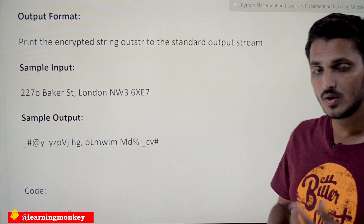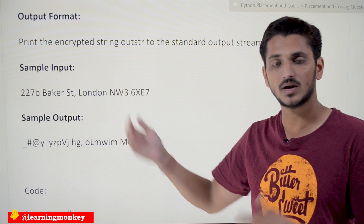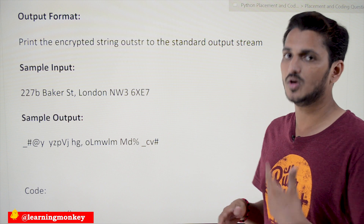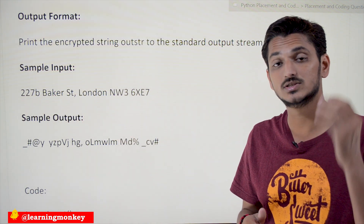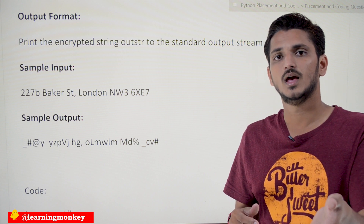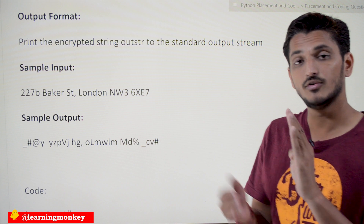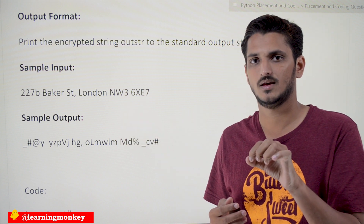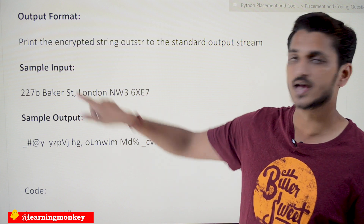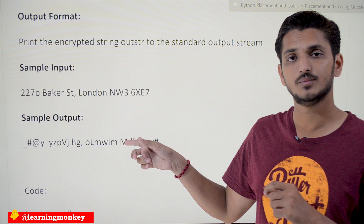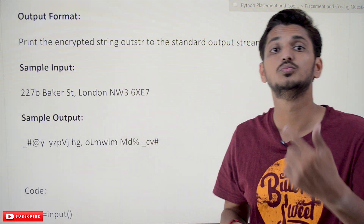Here is a hint on how to write the code. Read the string step by step, character by character — we discussed how to read and modify strings in our basic examples. Use functions to check if a character is an alphabet or digit. Maintain two counts: one for digits and one for alphabets, so you can track every fifth alphabet for uppercase and cycle through the four digit symbols. Use the modulus operator to repeat the symbol sequence.